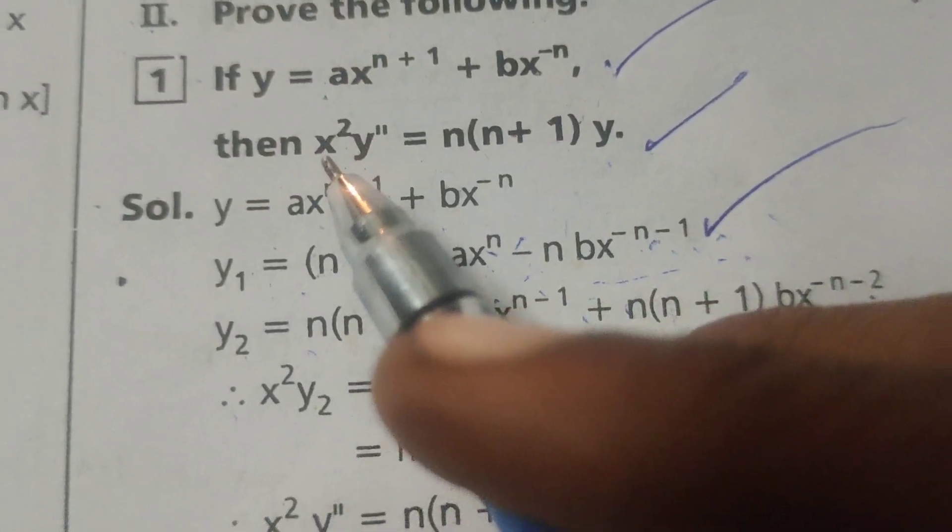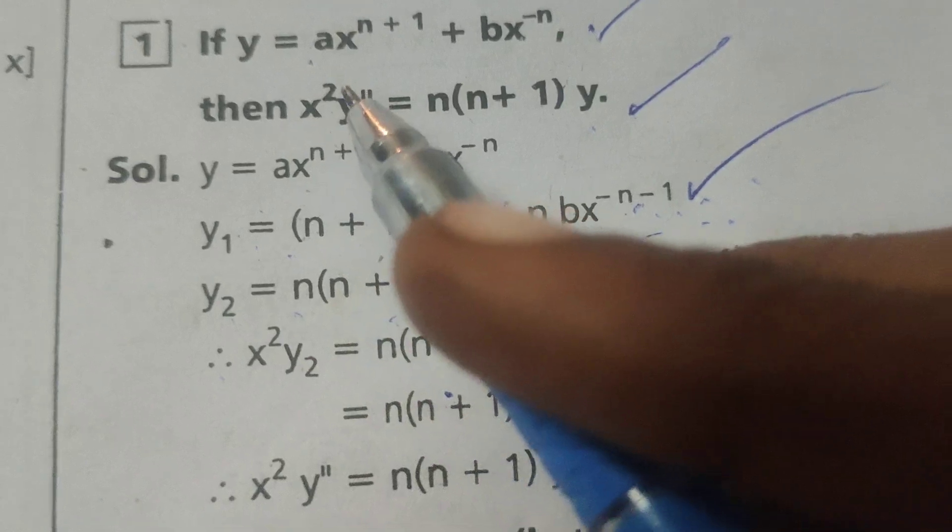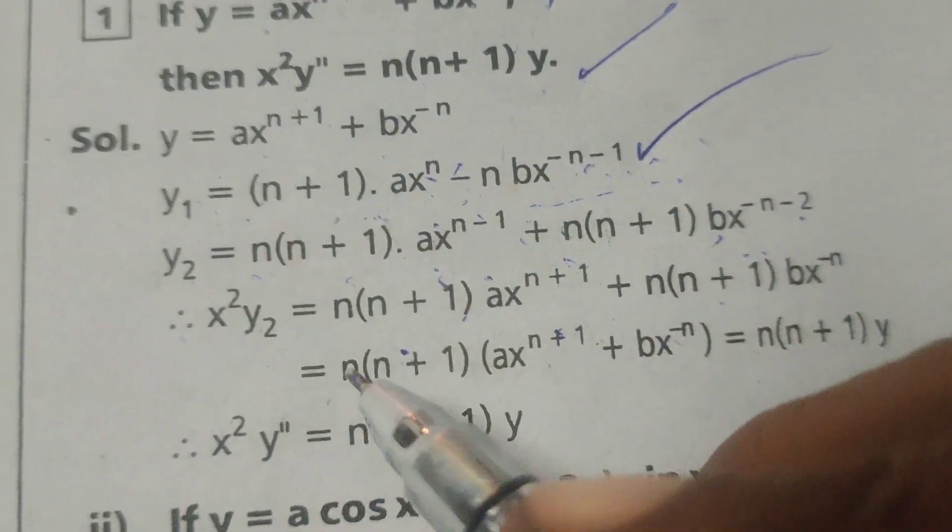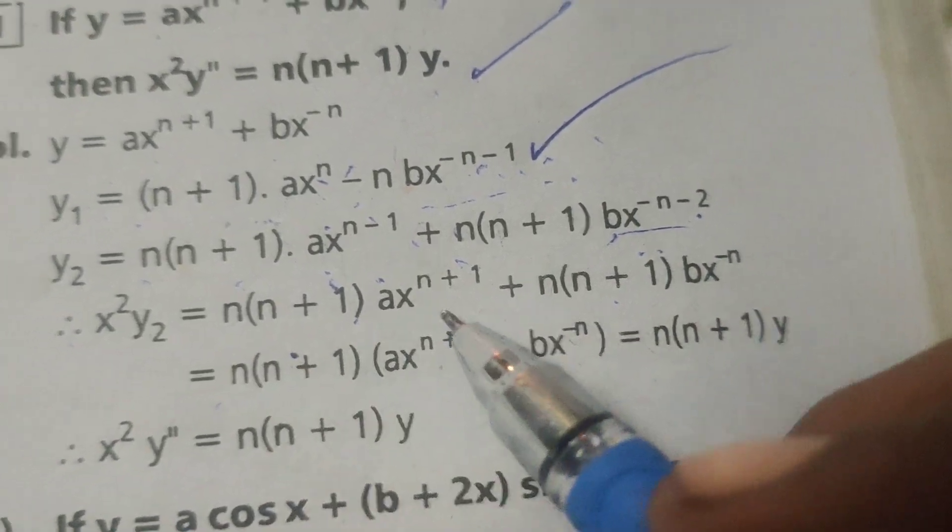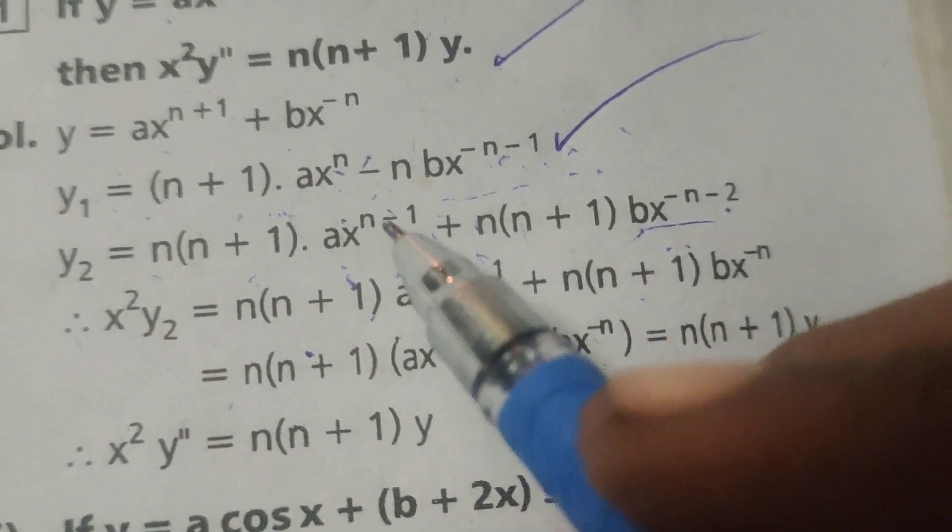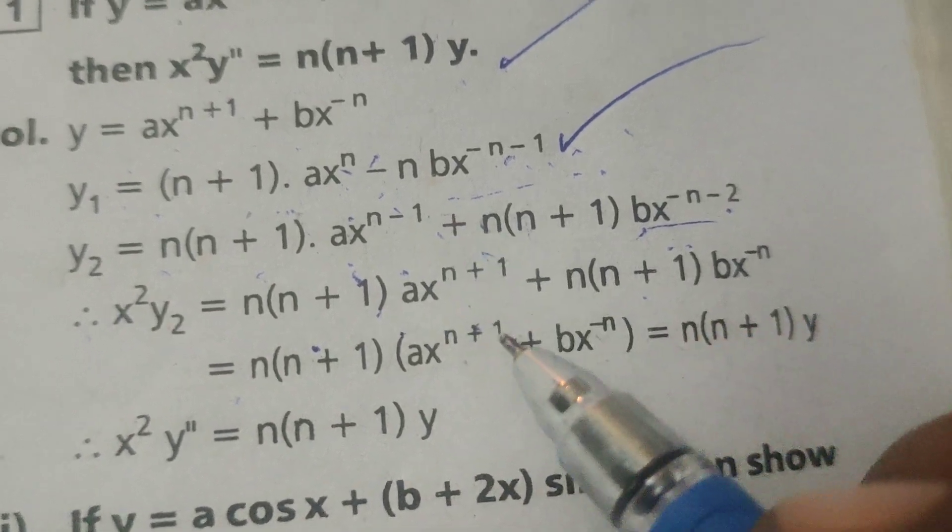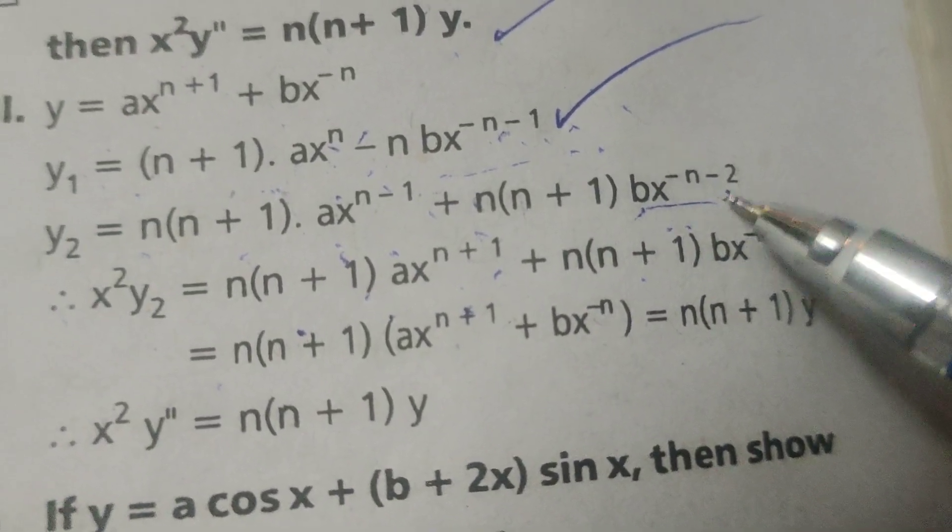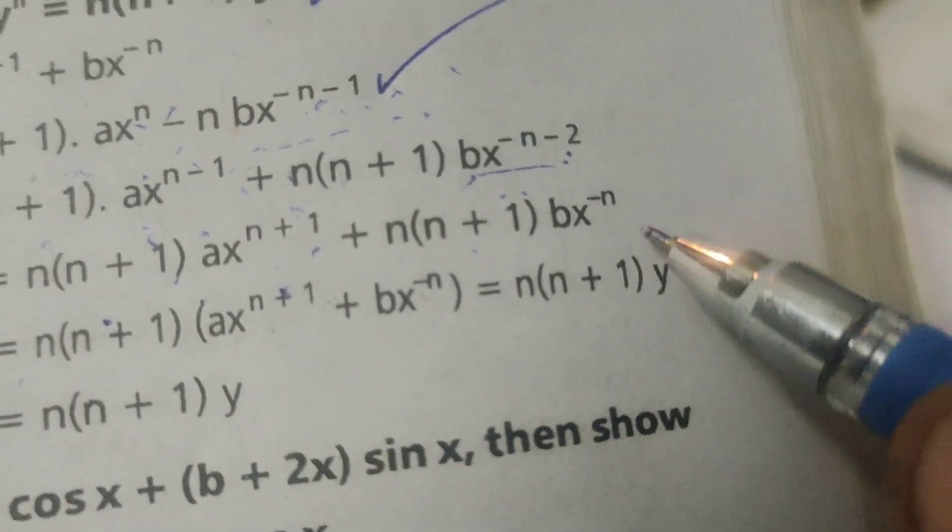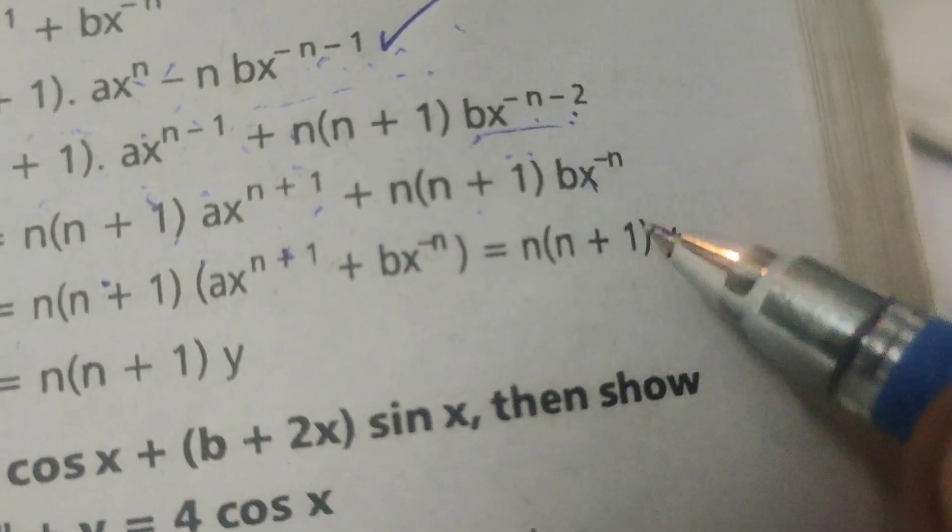Find out by the given condition LHS, x square y double dash or x square y2. This y2 throughout multiplied by x square, minus 1 plus 2 is plus 1. Here minus 2 plus 2 gets cancelled. Therefore x power minus n.